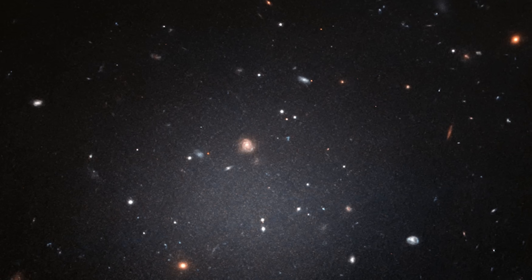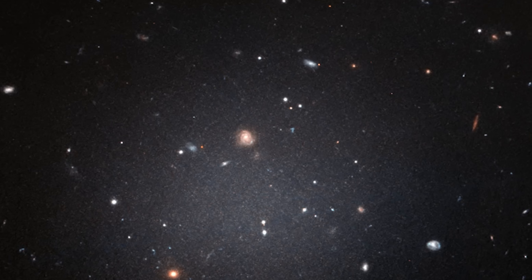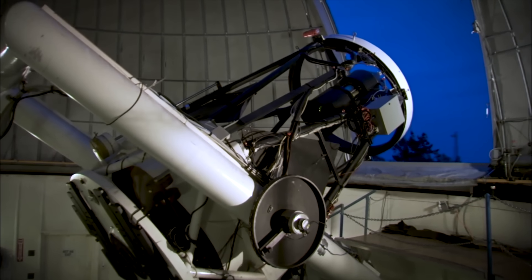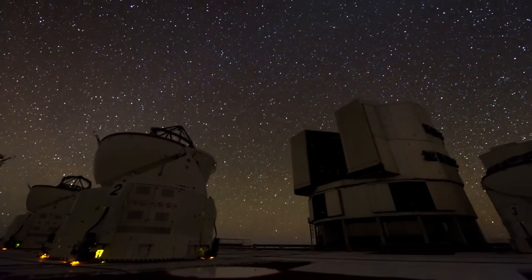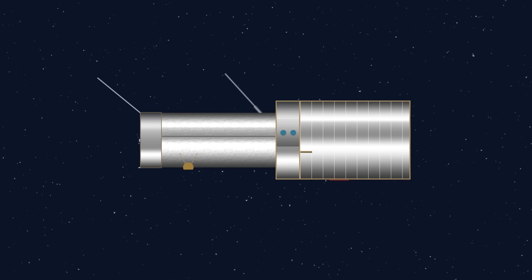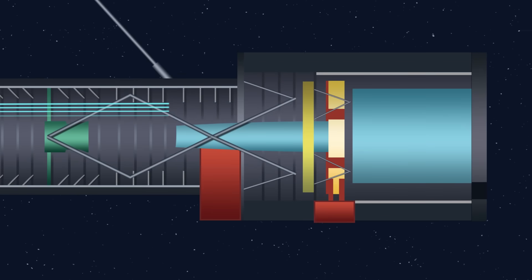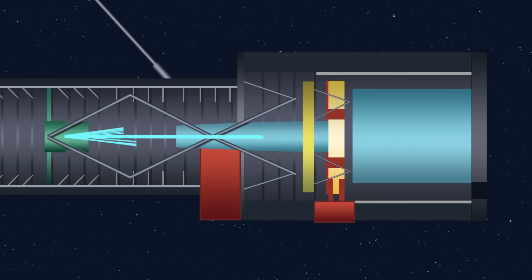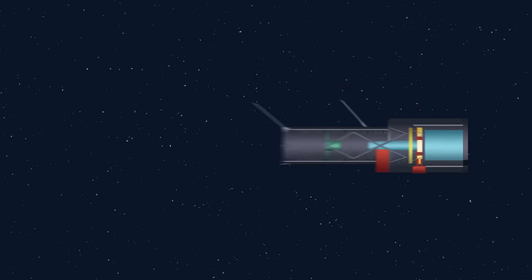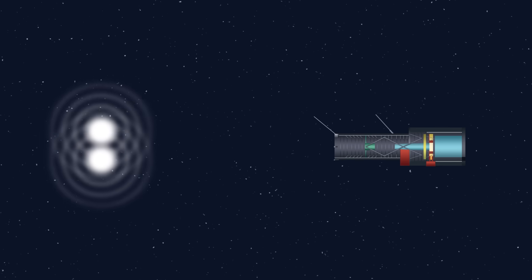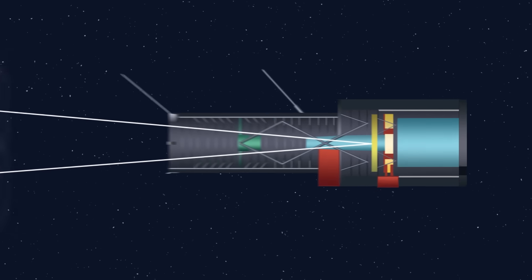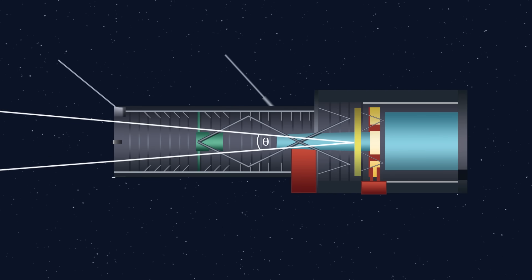In order to observe the furthest and dimmest objects in the universe, you need an extremely high-resolution telescope and the ability to capture as much light as possible. The resolution of a telescope is limited to the number of wavelengths it can fit across its mirror. The angular resolution of a telescope measures its ability to identify two separate objects that have a short angular distance when observed by a telescope.